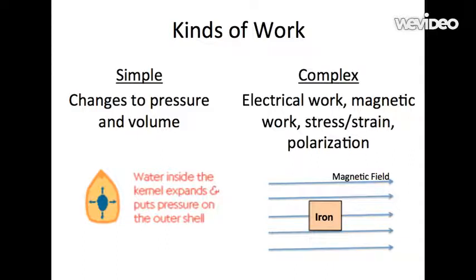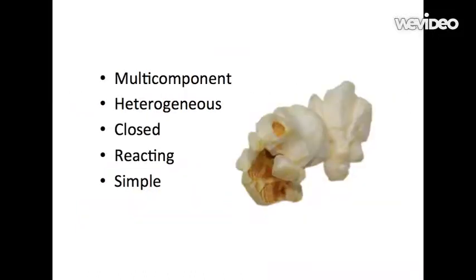The final category that we use to classify a system is by looking at the kinds of work that are present. Since our system of popcorn is dealing only with changes to pressure and volume, our system is classified as simple. To summarize, our system is multi-component, heterogeneous, closed, reacting, and simple.